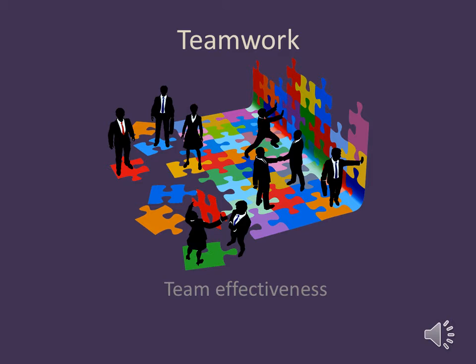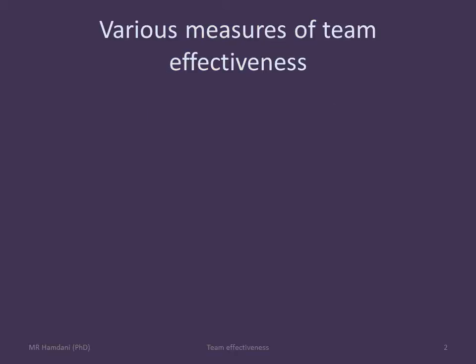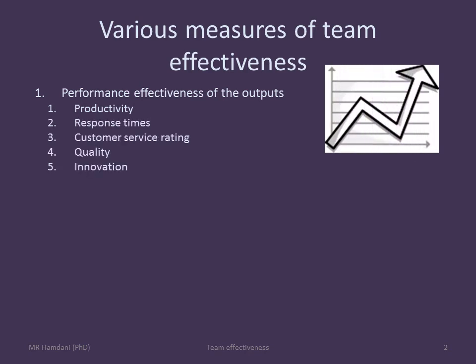Broadly speaking, there are three main methods of assessing team effectiveness. The first category of measures looks at effectiveness of the outputs, which means these are more tangible indicators of team performance. For instance, if it is a production team, you can look at productivity, response times, customer service ratings, quality, and innovation in the team.